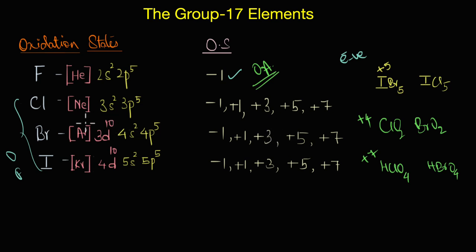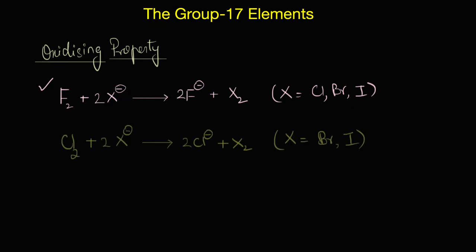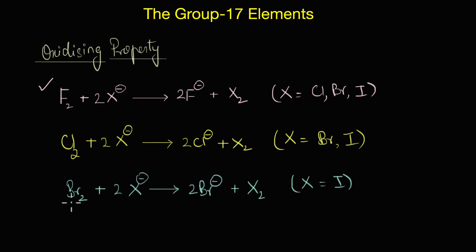This readiness to accept an electron makes fluorine a very strong oxidizing agent. In fact, fluorine is such a good oxidizing agent that it can literally oxidize other halide ions from their solutions - that is, it can displace all other halide ions like chlorine, bromine, and iodine from their solutions. We can extend this logic and say that any halogen will be able to oxidize the halide ions that are higher in their atomic number. For example, chlorine can displace bromide ions and iodide ions from their solutions, while bromine can only displace iodide ions from their solutions.